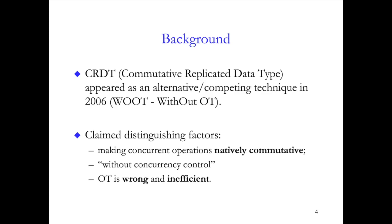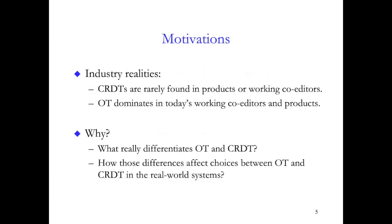CRDT first appeared in 2006 as a new approach to solve collaborative editing. It claims that it makes concurrent editing operations natively commutative, thus there's no need for operational transformation or concurrency control. It also claims that all past OT solutions are either wrong or inefficient or both. However, the purported benefits of CRDT have not translated to real-world adoption, with much of today's real-time co-editing products heavily favouring OT. This contradiction has generated much debate and controversy in both research and developer communities.